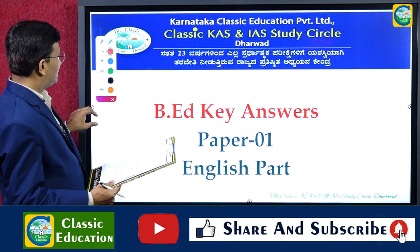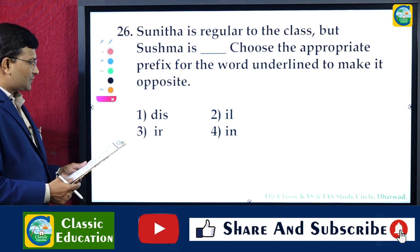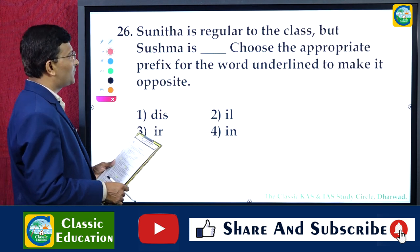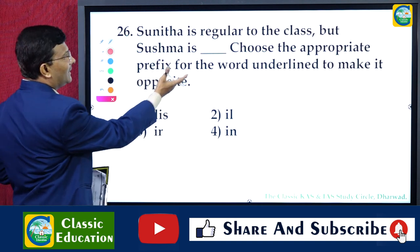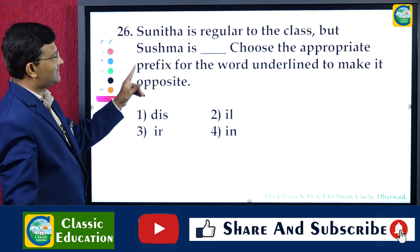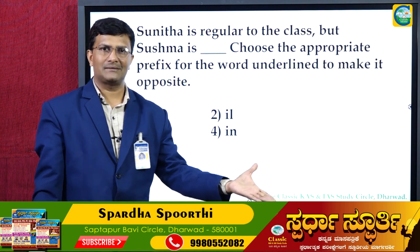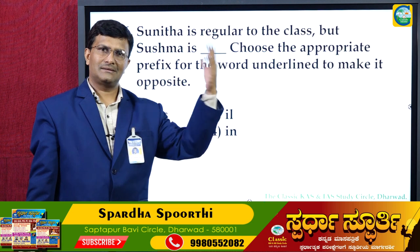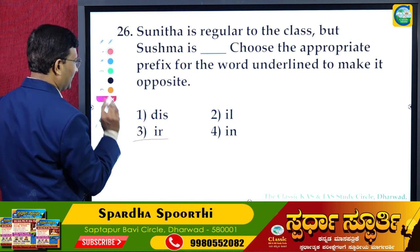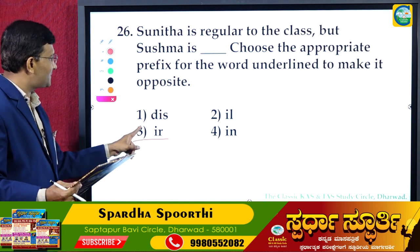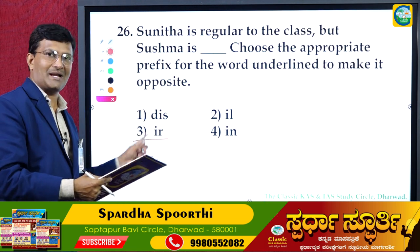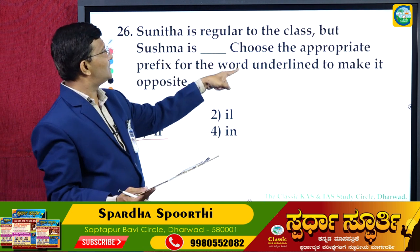General English: 'Sunita is regular to class but Sushma is...' — choose the appropriate prefix for the underlined word to make its opposite. Prefix means adding at the first, suffix means adding at the last. For example: sincere → insincere, correct → incorrect, regular → irregular. So the prefix 'ir' is added to make the antonym. Impossible — 'im' is a prefix, 'possible' is the base. Here 'regular' becomes 'irregular'.